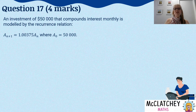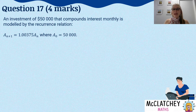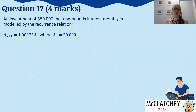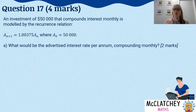An investment of $50,000 that compounds interest monthly is modelled by the recurrence relation A_{n+1} = 1.00375 × A_n, where A_0 = 50,000. The question is asking us: what would be the advertised interest rate per annum compounding monthly?